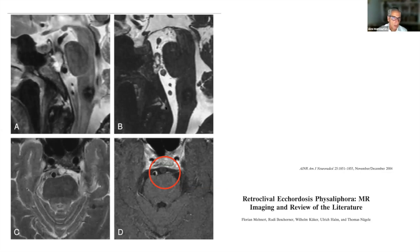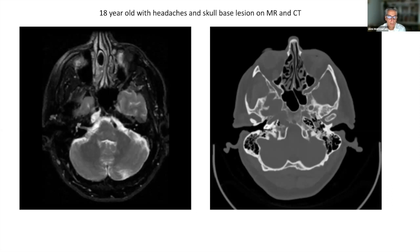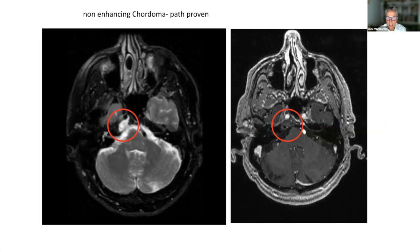Here is a more typical appearance of this notochord remnant — it lies in the cistern with a little attachment to the clivus and no enhancement after contrast administration. In a different patient, we have an off-midline mass with T2 prolongation and bony destructive change. It does not enhance. The off-midline location and bony destructive change should take you away from the notochord remnant; however, the lack of enhancement is not typical for a chordoma. Because it was changing over time, this went to surgery and proved to be a non-enhancing chordoma. So enhancement alone is not the only feature you can rely on.